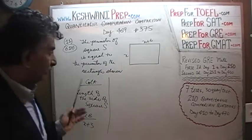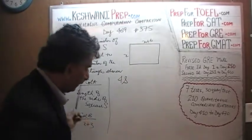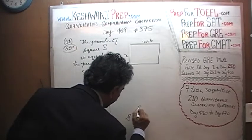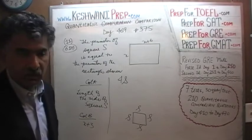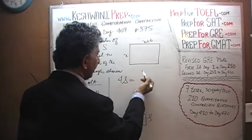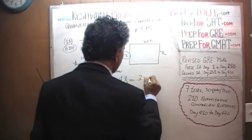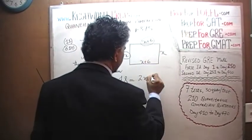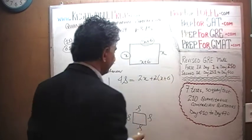The perimeter of a square with side s is four times s. The perimeter of the rectangle: this side is x and this side is x, so that's 2x. And this side is x plus 6 and this side is x plus 6, so that's two times (x plus 6). Setting them equal: 4s = 2x + 2(x+6).